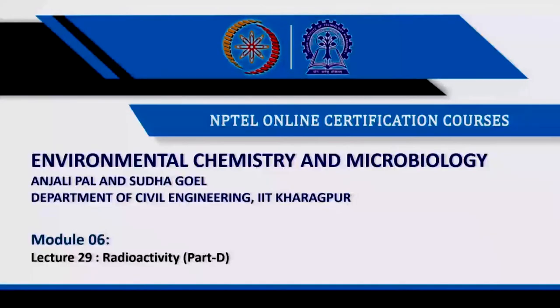This is my sixth module and 29th lecture. In my previous modules I covered acids, bases and salts in the first module; chemical equilibrium in the second module; chemical kinetics in the third module; catalysts and catalytic reactions in the fourth module; and chlorine chemistry and nitrogen chemistry in the fifth module. This sixth module covers radioactivity or nuclear reactions.